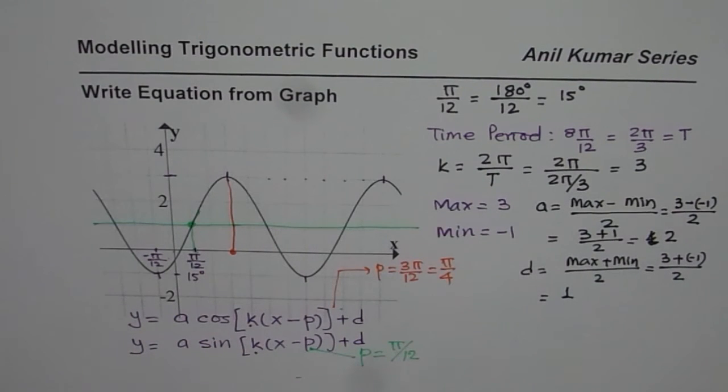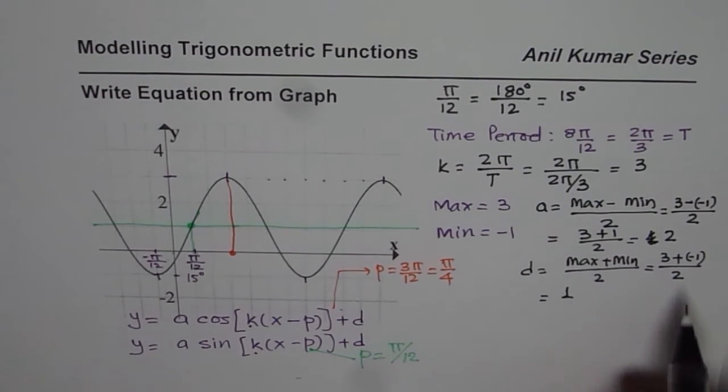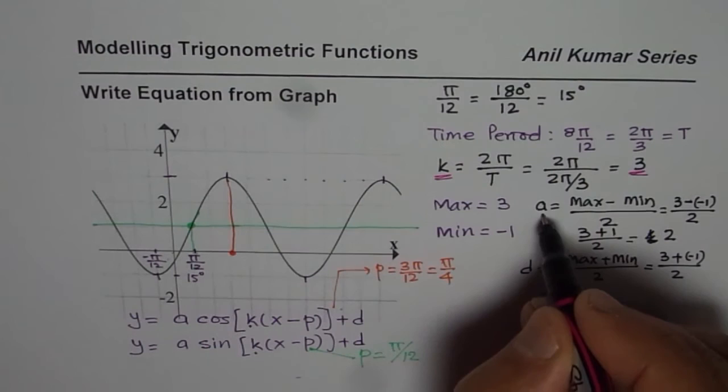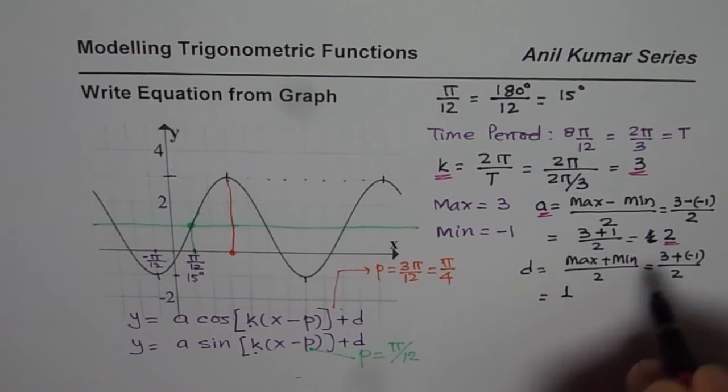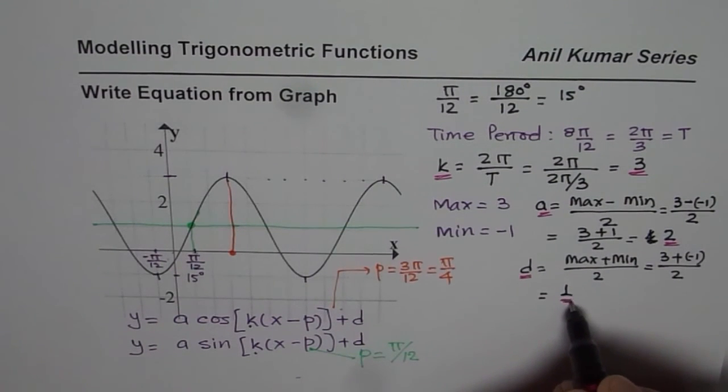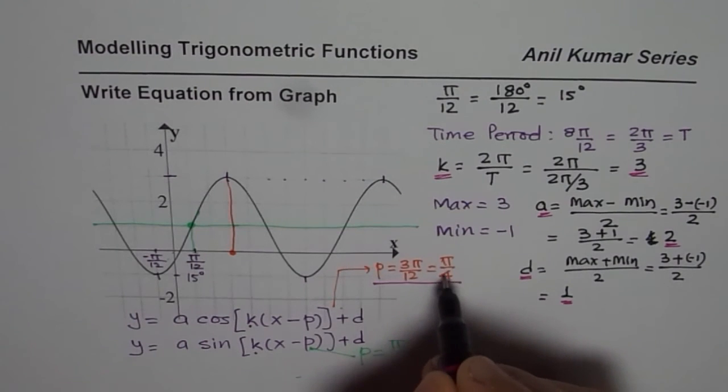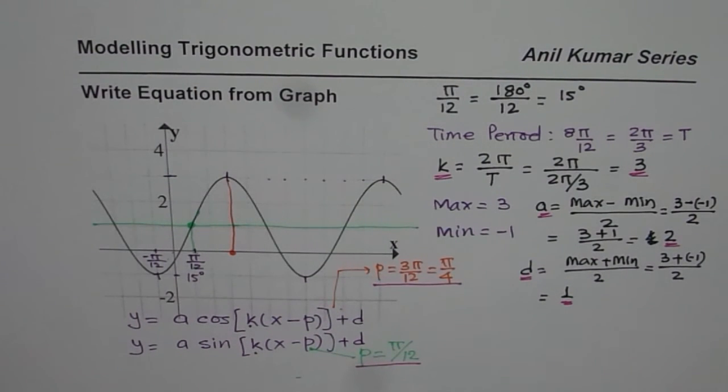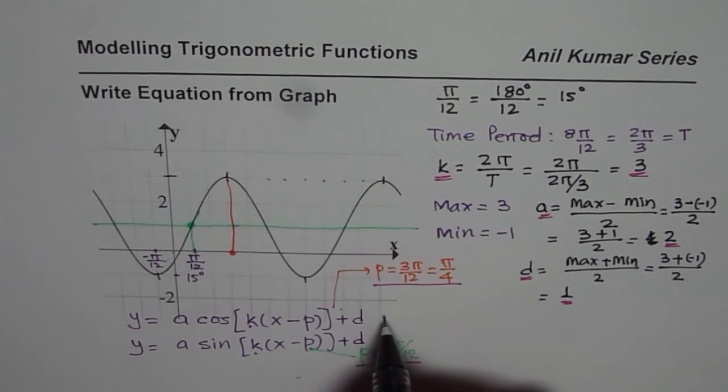That is the only difference between these two equations. Otherwise, these equations will be exactly same. Now since we have all the values here, let me circle them for you. We have k = 3, a = 2, d = 1, and p for cosine is π/4 to the right. For sine, it is π/12.